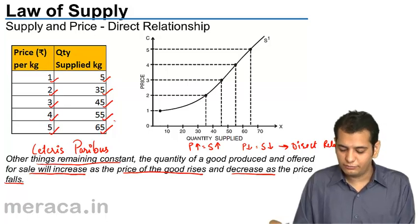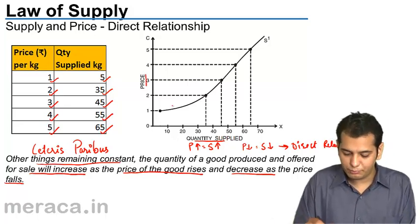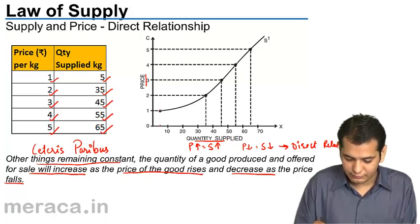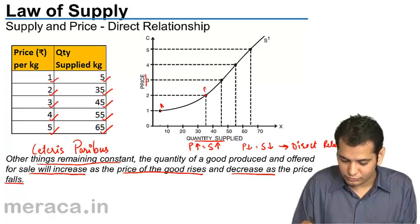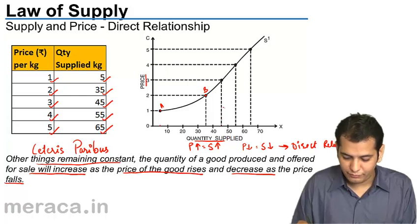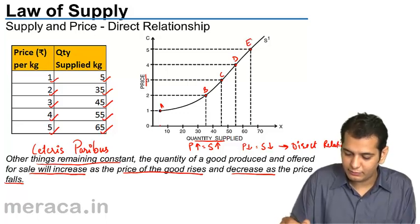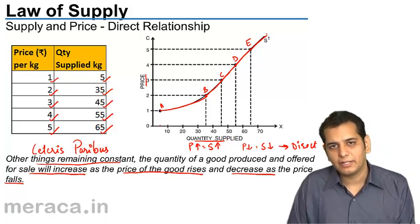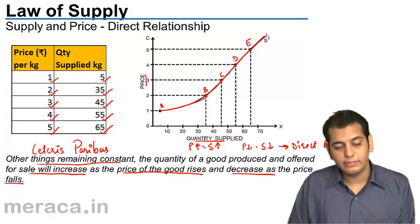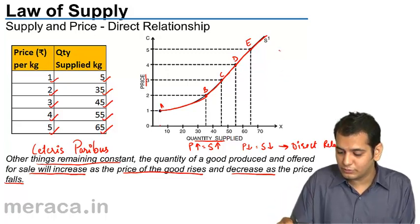If we plot these points on the graph, taking quantity supplied on the x-axis and price on the y-axis — point A (1, 5), point B (2, 35), point C (3, 45), point D (4, 55), point E (5, 65) — and when we join all these points, what we get is the supply curve. This curve is called the supply curve, and it always has a positive slope.